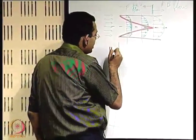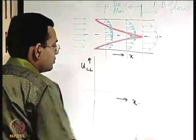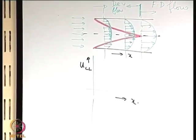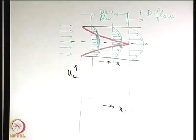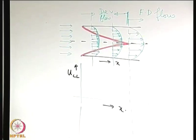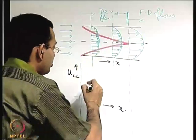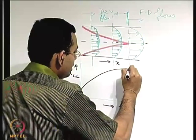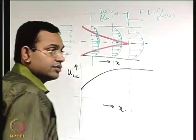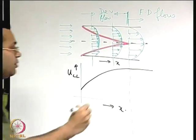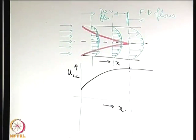Let us plot the centre line velocity as a function of x. The centre line velocity gradually increases in the developing region, then reaches the fully developed state, and beyond that it remains constant. The fully developed centre line velocity can be easily obtained by referring to the parabolic velocity profile derived earlier.